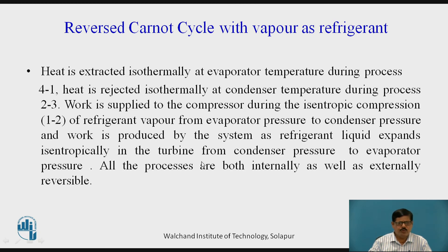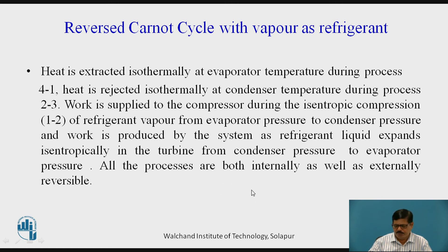The cycle involves two isothermal heat transfer processes — four to one (evaporation) and two to three (condensation) — and two isentropic work transfer processes — one to two (compression) and three to four (expansion). Heat is extracted isothermally at the evaporator, heat is rejected isothermally at the condenser, work is supplied to the compressor during isentropic compression, and work is developed as liquid expands isentropically in the turbine from condenser pressure to evaporator pressure. All four processes of the reverse Carnot cycle are reversible both internally and externally.